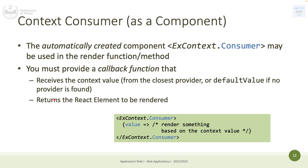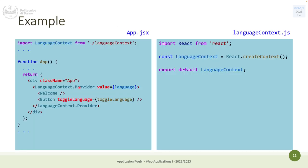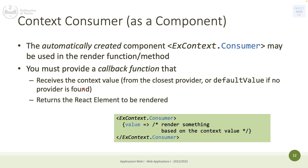Consumers can be created in two ways: one similar to the provider — Context.Provider and Context.Consumer as a component — or you can use a hook. When you define a consumer as a component, you provide a callback function that gets the value from the provider and does something with it. In the case of language it will load text in the other language; in the case of dark/light mode it will change colors, stylesheets, or classes.